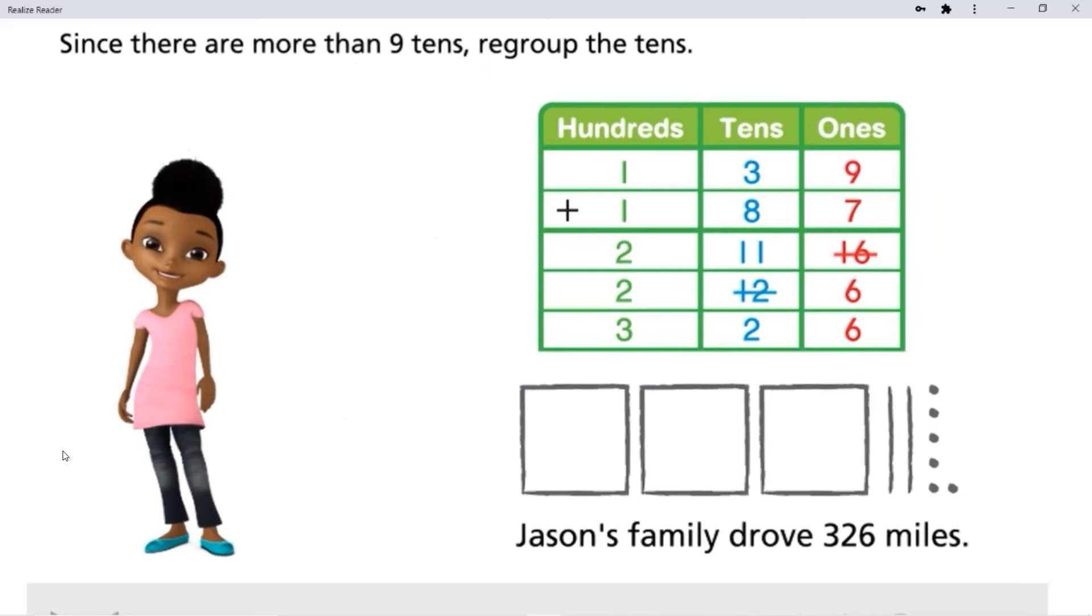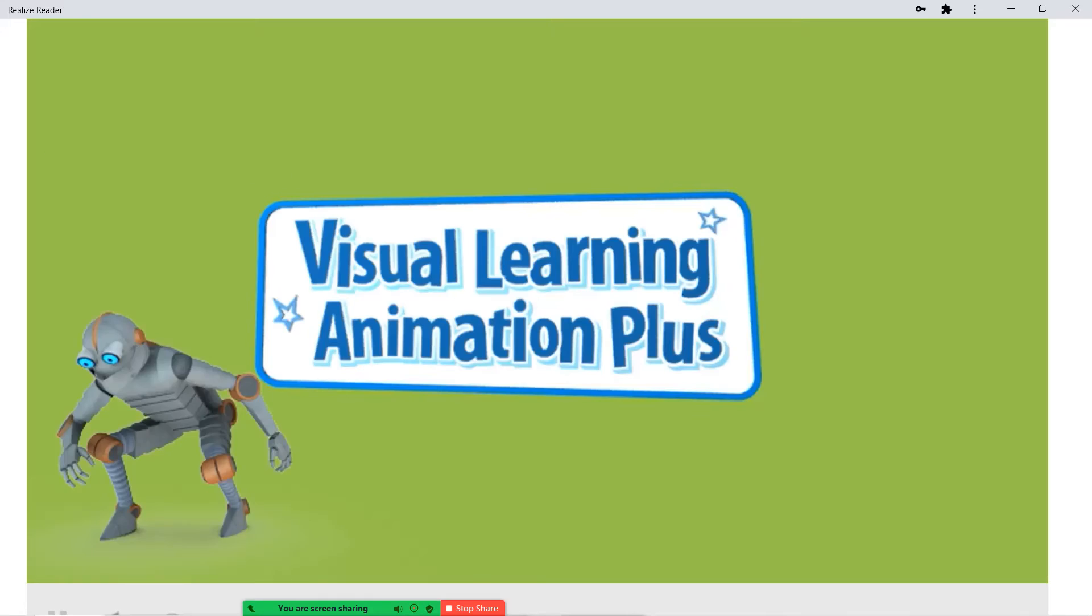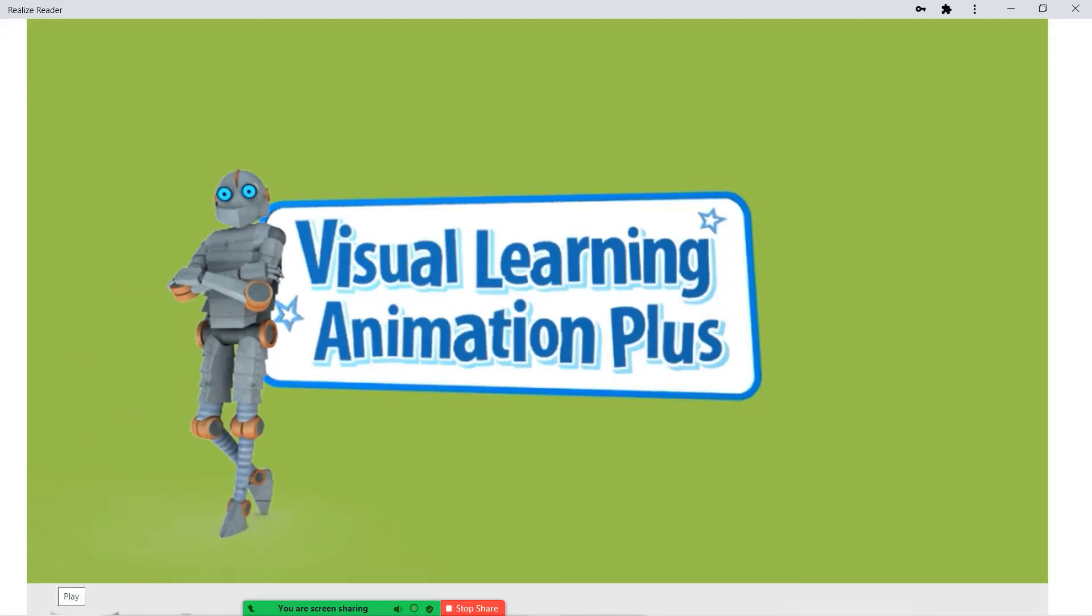Okay. So what they did here was they were switching out whenever they made more than a group of 10 or they made a group of 10 or greater with their ones, they switched it out. So instead of having 16 ones, they put six ones and they took a group and added it over to the tens. Now with the tens, they had 12 tens. So they switched that out as well. They regrouped it. Instead of 12 tens, they took out 10 of them and made them a group of 100 and kept the two tens.